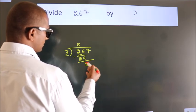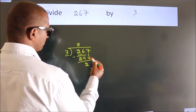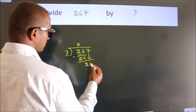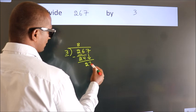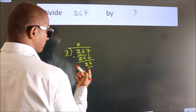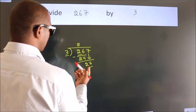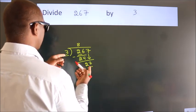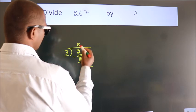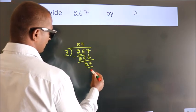After this, bring down the beside number. So 7 comes down, giving us 27. When do we get 27 in the 3 times table? 3 nines: 27.